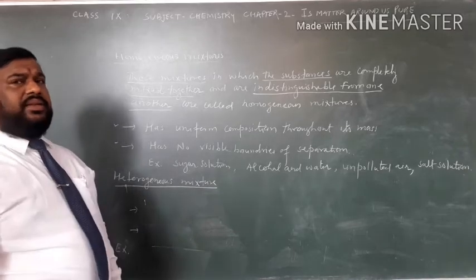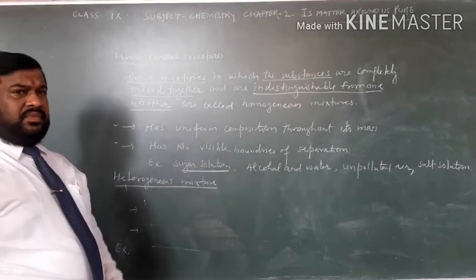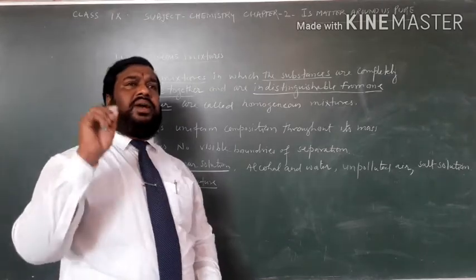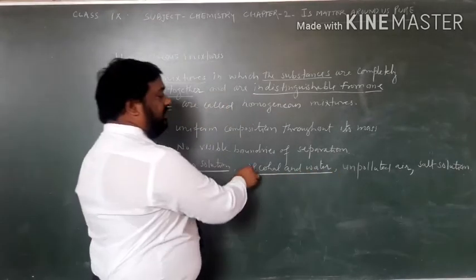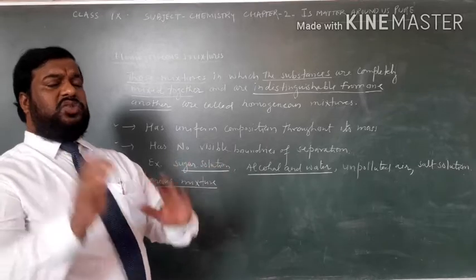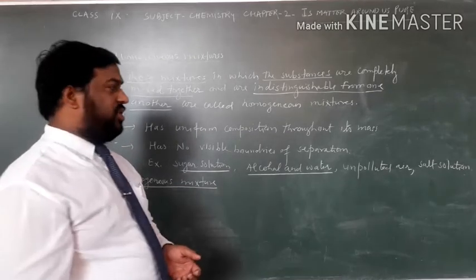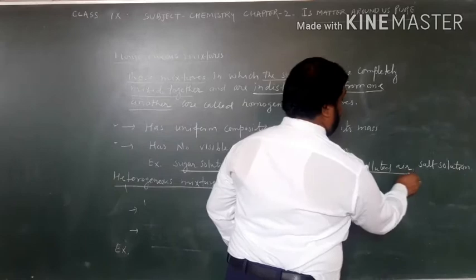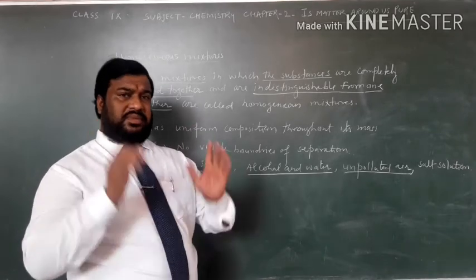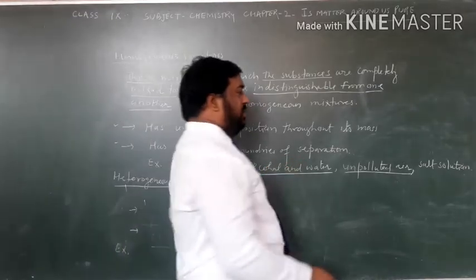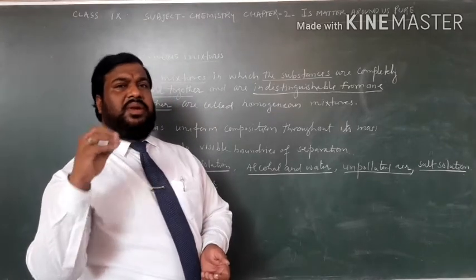For example: sugar solution, the solution of water and sugar. Second, alcohol and water - both mix well, alcohol mixes well in water and forms a homogeneous mixture. Unpolluted air - if air is unpolluted then it forms a type of homogeneous mixture. Next is salt solution, solution of sodium chloride in water.